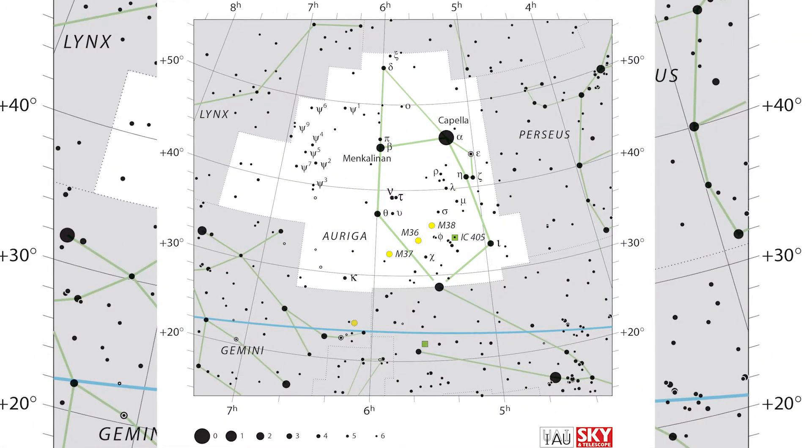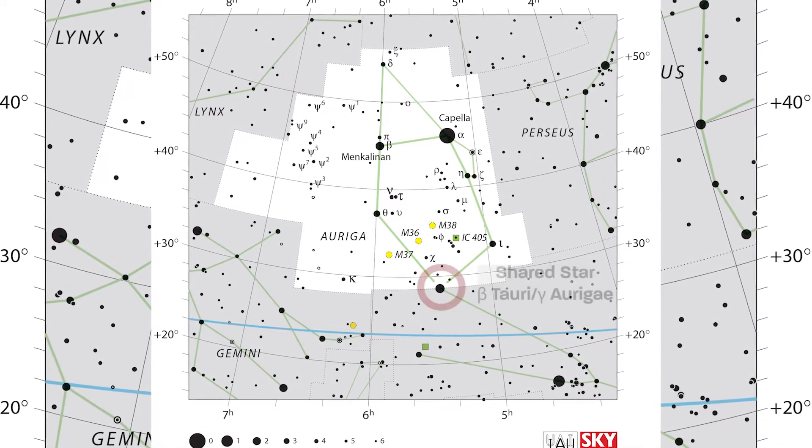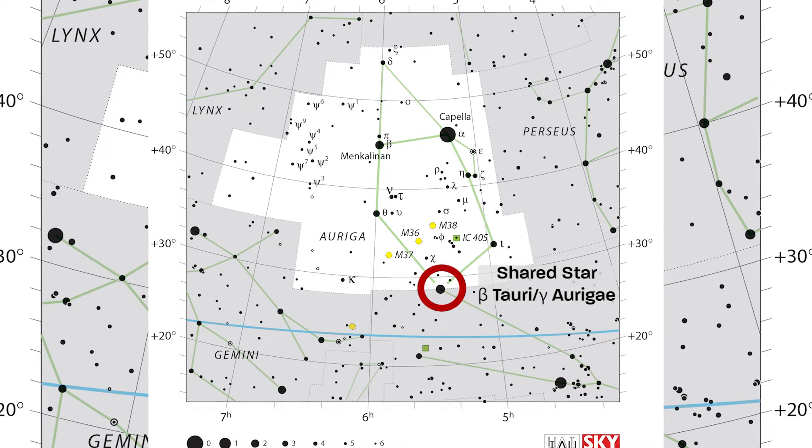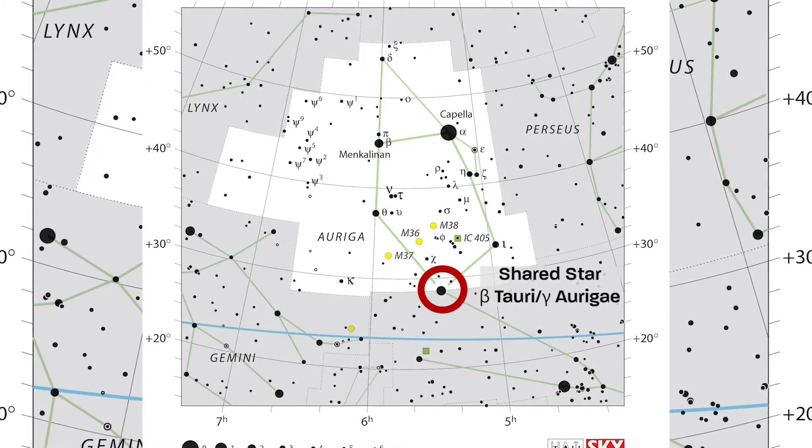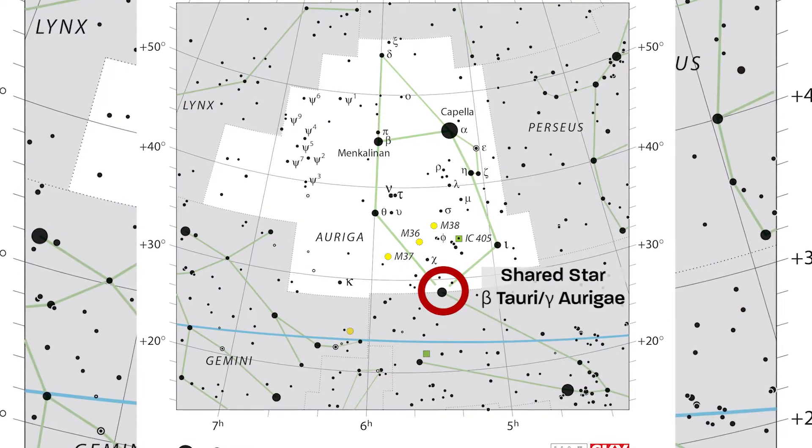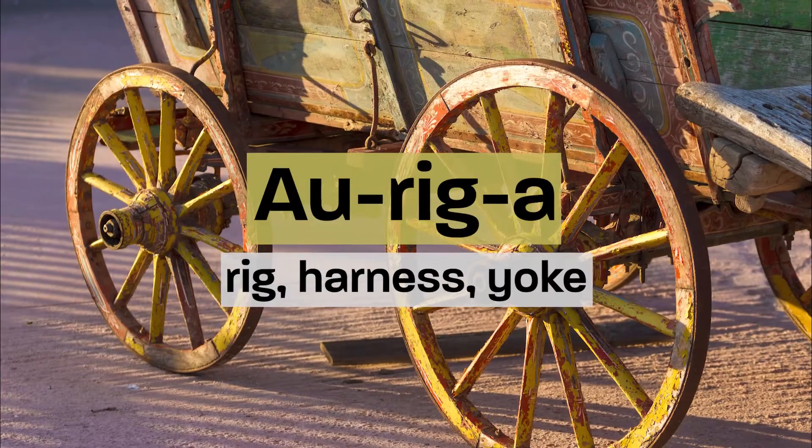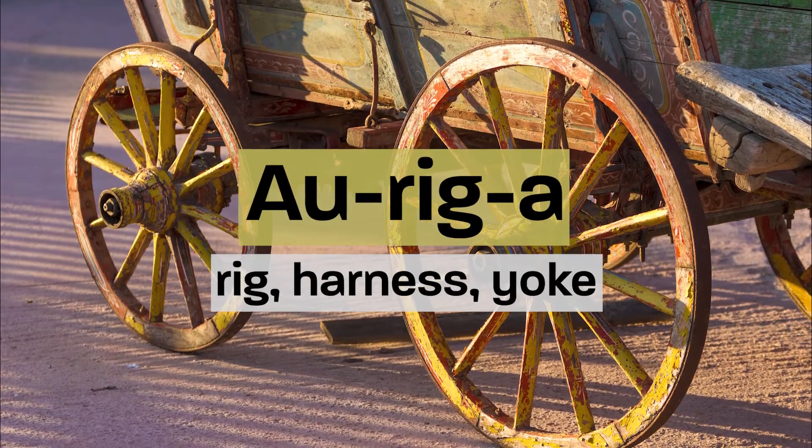In the International Astronomical Union star chart, you can see the star Gamma Auriga on the border between Auriga and Taurus. Today this star is most commonly known as Beta Tauri, but I like the idea of the star connecting both constellations because the name Auriga has the root word rig, which means harness or yoke.